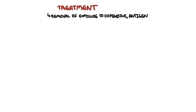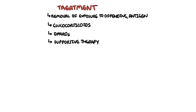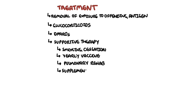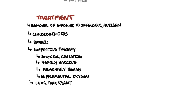For treatment, removal of exposure to the offending antigen is essential. Glucocorticoids are often used for those with more severe symptoms. Disease-modifying anti-rheumatic agents have been used in those with poor response to glucocorticoids. Supportive care — including smoking cessation, vaccination, pulmonary rehabilitation, and supplemental oxygen — should be provided in patients with chronic hypersensitivity pneumonitis. Lung transplantation can also be considered in selected patients.